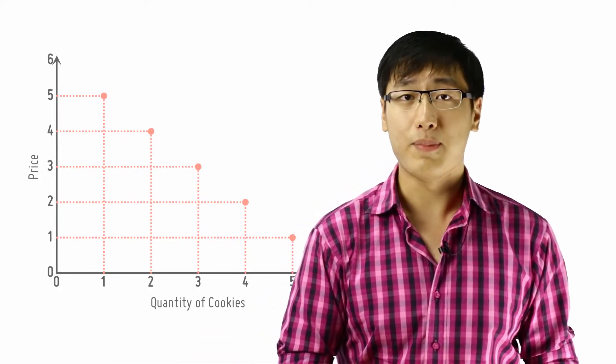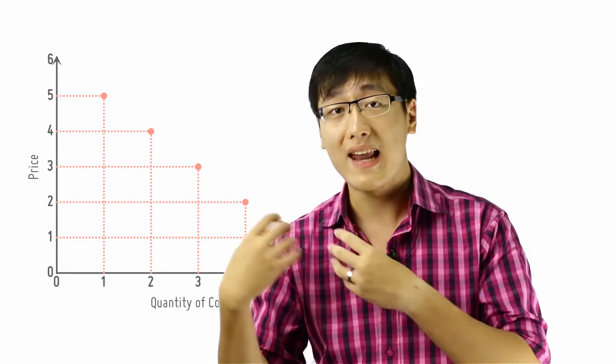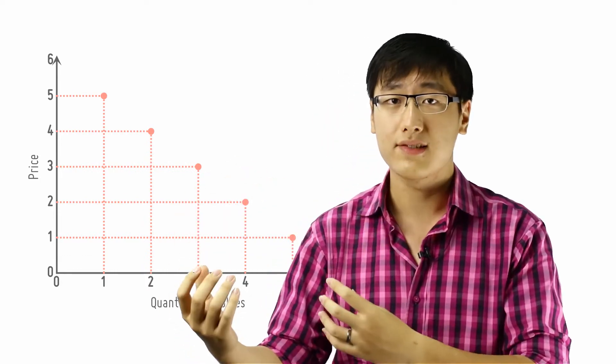Now, what you see happening is that on the graph, you have five dots. And these dots basically show the relationship between the price and the quantity.